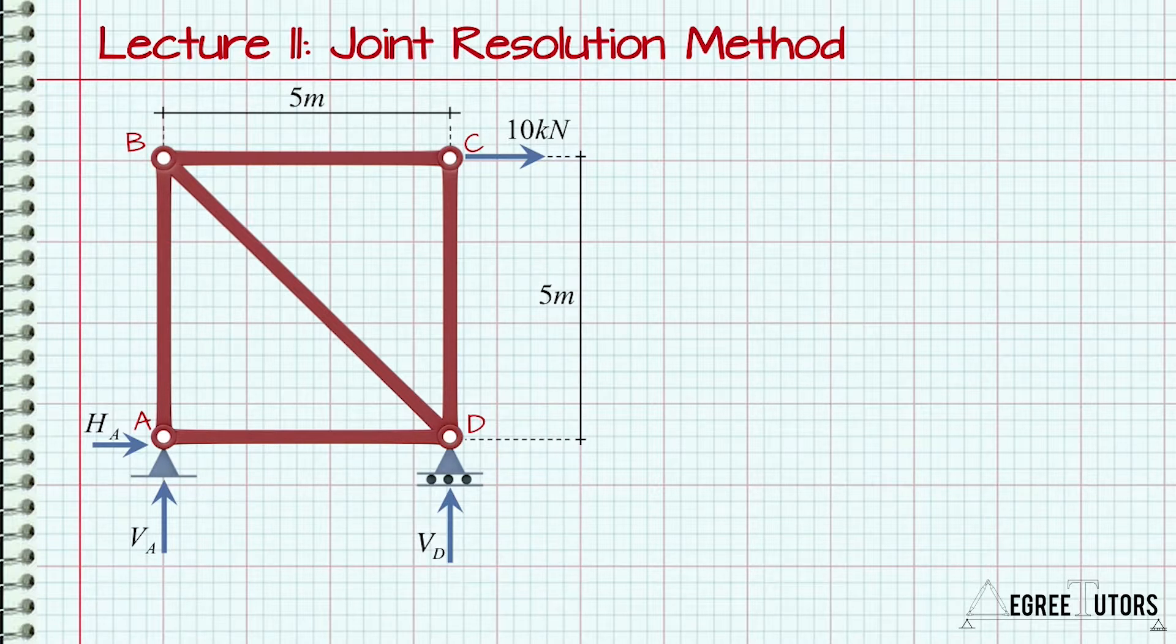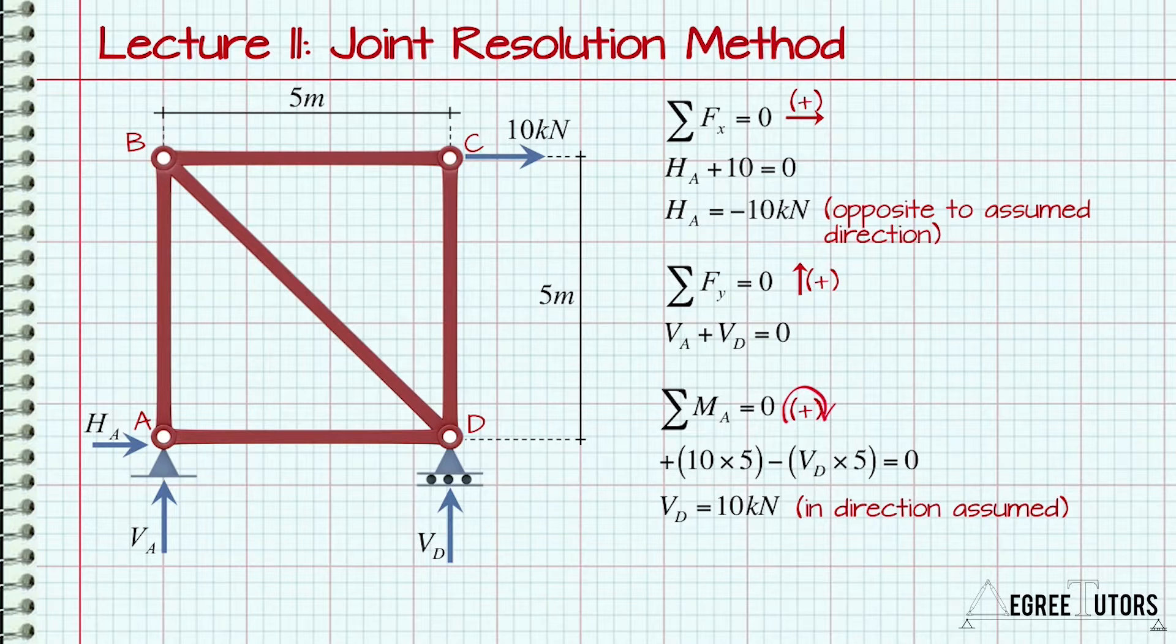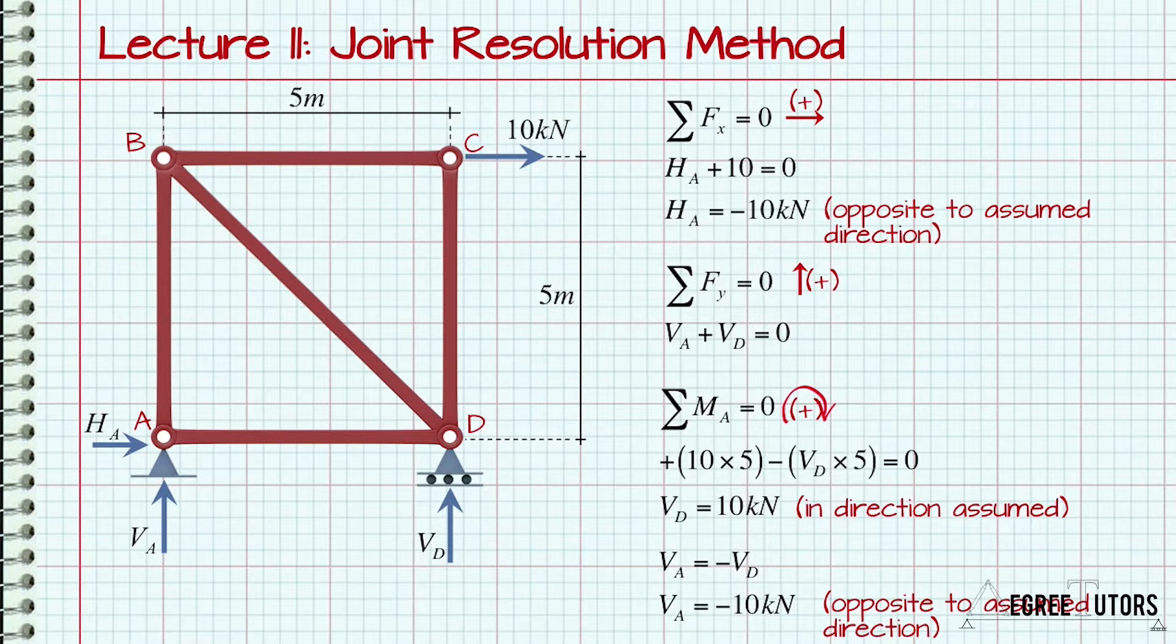Remember, using the equations of equilibrium we can only determine a maximum of three unknown reactions. We can see that HA is 10kN acting to the left. It resists the applied 10kN external force. The two vertical reactions are the only vertical forces to consider. Finally, taking moments about point A yields VD equal to 10kN. We can now use this information to determine that VA equals 10kN acting downwards.